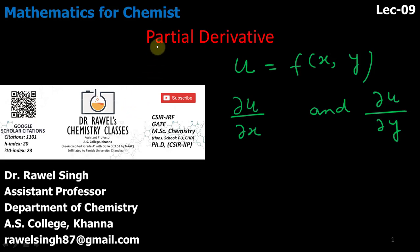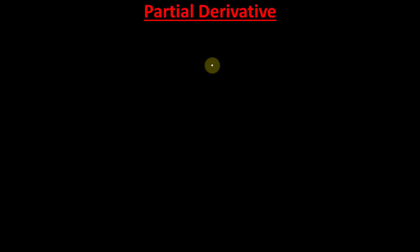Dear students, today we will discuss partial derivatives. So far we have discussed differentiation with only one variable and also found its application to find maxima and minimum values. Today we will discuss yet another very important topic: partial derivatives. This topic has huge application in chemistry because in chemistry our properties are functions of more than one variable.